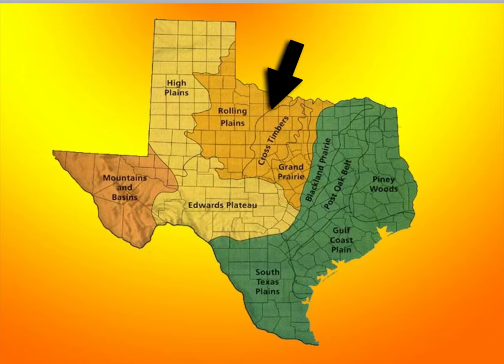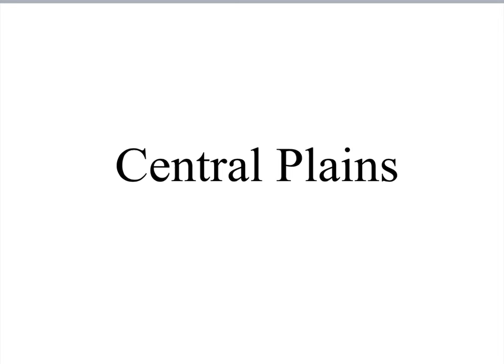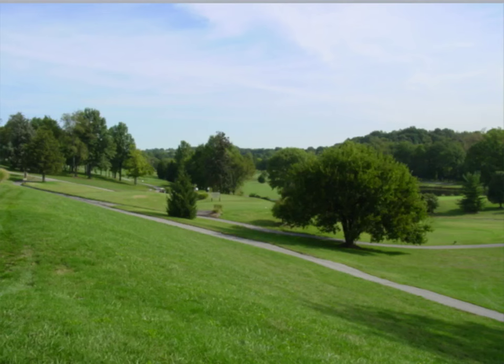Our fourth and final region of Texas is the Central Plains region. The Central Plains has a little higher elevation than the Coastal Plains. The land rises from 600 feet above sea level to about 2,000 feet above sea level at the western edge. The Central Plains region is a rural area, not having a high population. It has warmer summers and cooler winters. There is not much rainfall here.